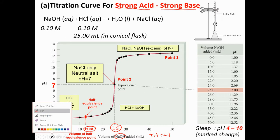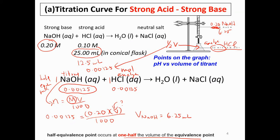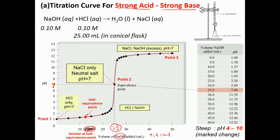Now if I use the other case with 0.2 M concentration, the volume of NaOH will be 6.25 ml. This means I can no longer label the half-equivalence point as 12.5 — the half-equivalence point will now occur at 6.25 ml because the concentration is different.